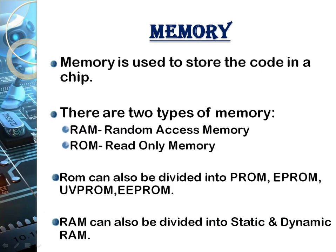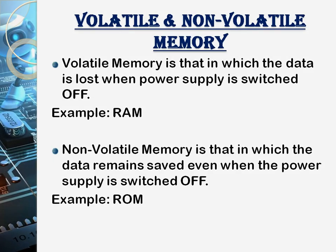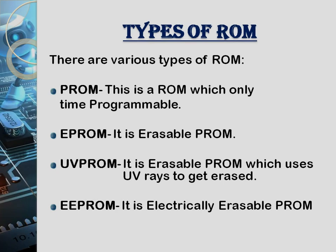Memory can be of two types: RAM and ROM. Memory can be volatile or non-volatile. Volatile memory loses its data when the power supply is switched off, but in non-volatile memory, the data remains saved even when the power supply is switched off.